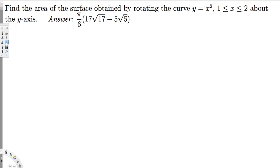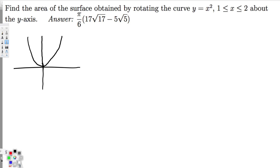We know that this is going to be a parabola opening up, so let's draw the graph first. The region is from one to two, so this is one and this is two, and the region we are interested in is this region right here. Whenever they say this is rotating around the y-axis, we have to write the surface area formula.